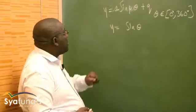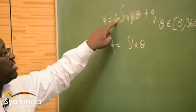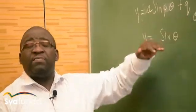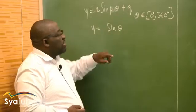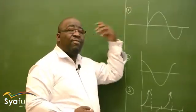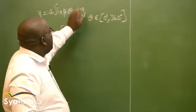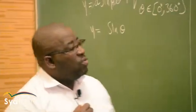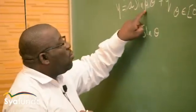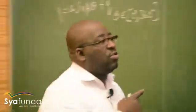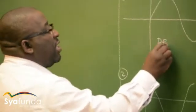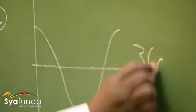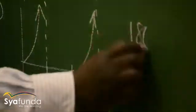I want us to understand how to sketch this graph. The first thing you need to understand is the amplitude — that is the value A. The value P will give you the period. The value Q is a vertical shift: if it is plus, you push the sine graph up by that value of Q; if it is minus, you shift it down. The period of the sine and cosine graphs is 360 degrees, whilst the period of the tan graph is 180 degrees.